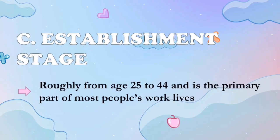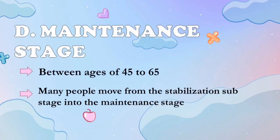The establishment stage is roughly from age 25 to 44 and is the primary part of most people's work lives. Hopefully, during this stage, a person has found a job or established a permanent career. During this stage, a person also tests their personal capabilities and ambitions against earlier occupational choices. The maintenance stage is between ages 45 to 65. During this stage, a person has a secure place in the work world. At this age, there are many accomplishments and the efforts exerted in working life are now being gained.